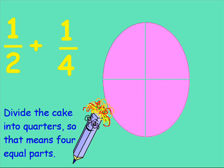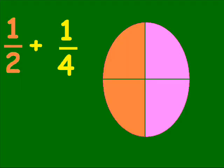So that means four equal parts. You can see that if we color in half of the cake orange, it is the same size as two quarters.